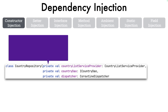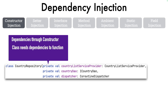Dependencies are being passed through the constructor. Country repository is the client class, and country list service provider, country DAO, and dispatcher are all the dependencies it needs — passed as constructor parameters. The class needs these dependencies to function since the very point of its instantiation, so it is a good idea to inject them at the time of instantiation when the constructor is invoked.